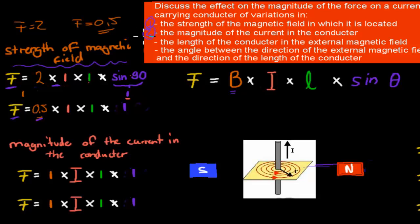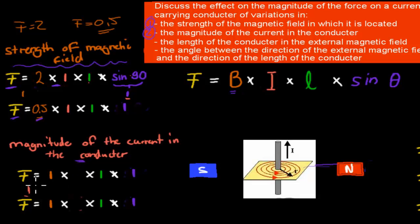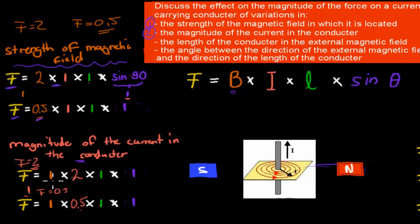The second part was the magnitude of the current in the conductor — what happens if we change the current? Keeping everything else constant and just changing I: if we had a current of 1, the force is 1. If we double the current to 2, we get 1 times 2 times 1 times 1, a force of 2. If we halve the current to 0.5, we get 1 times 0.5 times 1 times 1, a force of 0.5. So when we doubled the current, we also doubled the force; if we halve the current, we also halve the force.